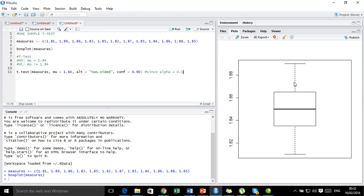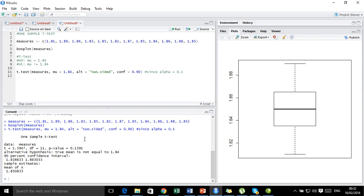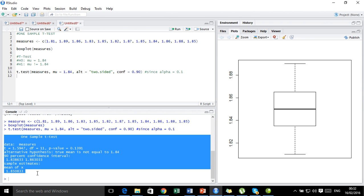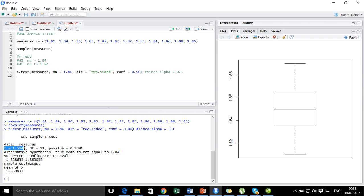Now let us run this code. And the t-test is done. We get the output for the one sample t-test. Here we get the t-value of 1.5947, degrees of freedom of 11, the p-value came to be 0.1391. Here is the alternate hypothesis as we specified: the true mean is not equal to 1.84. We also got the 90% confidence interval which is from 1.8386 to 1.8630. We have also got the sample estimate of the mean which is 1.8508.